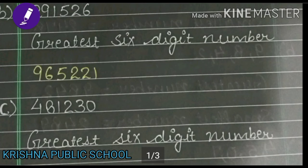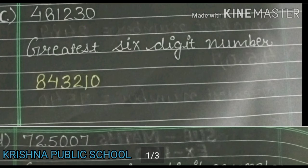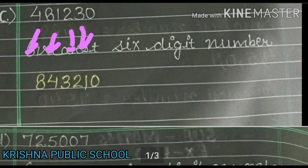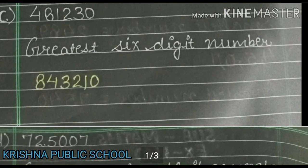Now we see part number C. We are given 4,81,230. We arrange the digits to form the greatest number. The greatest digit is 8, then 4, then 3, then 2, then 1, and lastly 0.